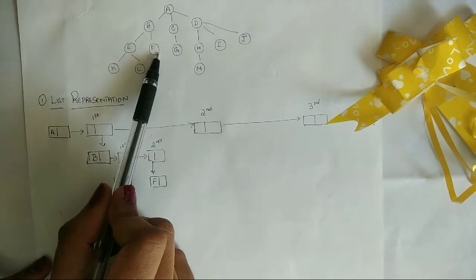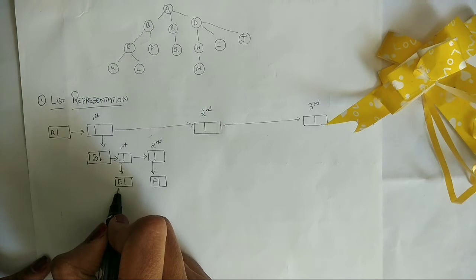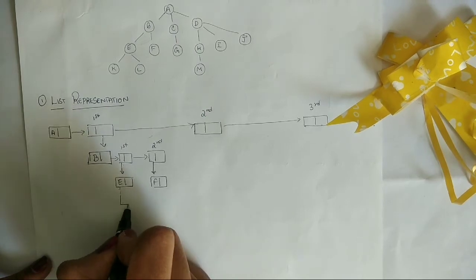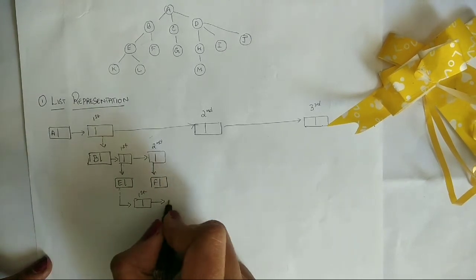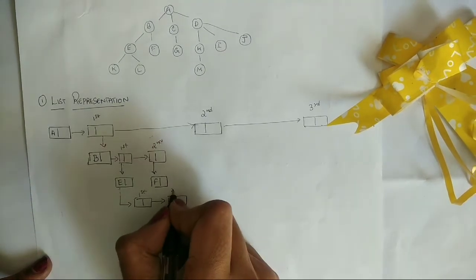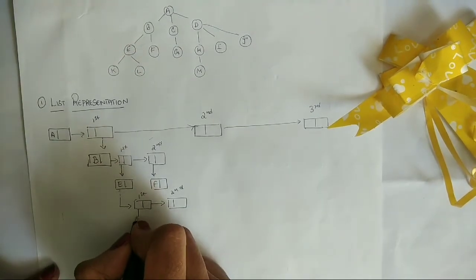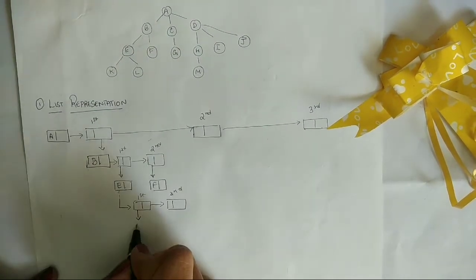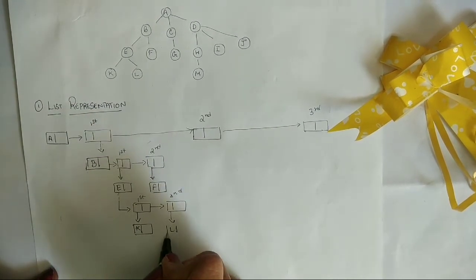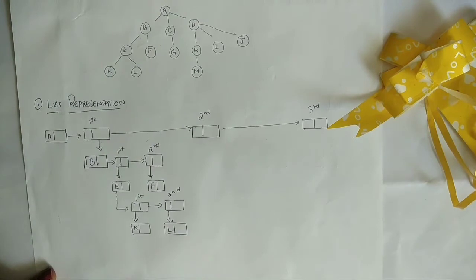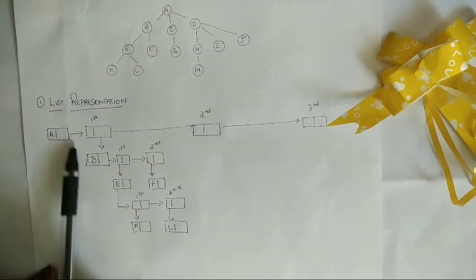F is the leaf node. E has two more child nodes. The first child node of E is K and then L. You can even move F over here and place E adjacent, as shown for A and B.